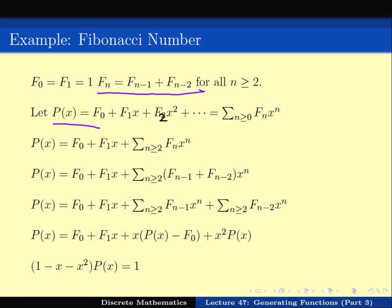Collecting terms, we get P(x) − x·P(x) − x²·P(x) = F0 + F1·x − F0·x. Since F0 = 1 and F1 = 1, the right-hand side is 1 + x − x = 1. Therefore P(x) = 1 / (1 − x − x²). Without much hard work, we have written P(x) as a closed-form function of x. All that remains is to compute the Taylor series expansion to find the nth coefficient.